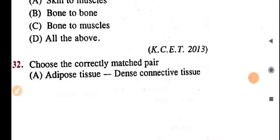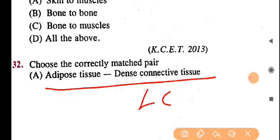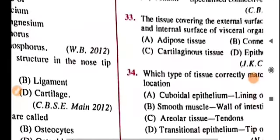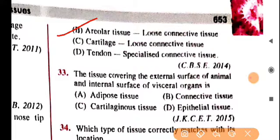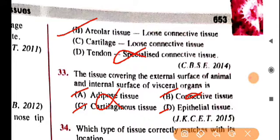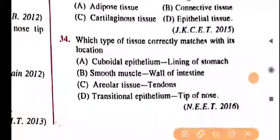Question 32: choose the correctly matched pair. Adipose tissue is loose connective tissue, not dense connective tissue — so that option is wrong. Areolar tissue as loose connective tissue is correct. Question 33: the tissue covering the external surface of animals and internal surface of visceral organs is epithelial tissue. Epithelial tissue's characteristic is that it covers both outer and inner body surfaces.